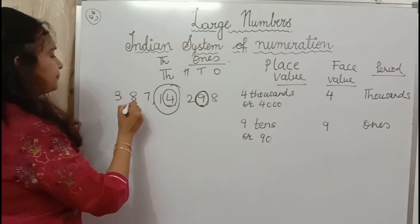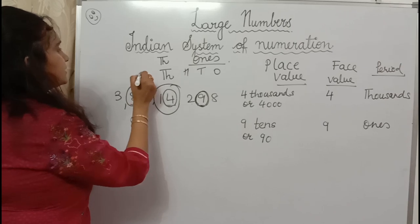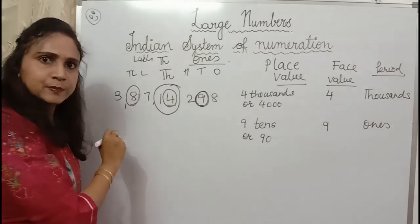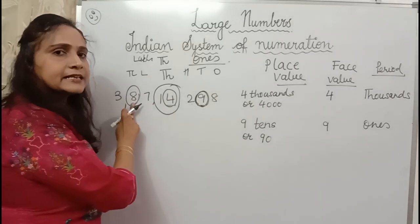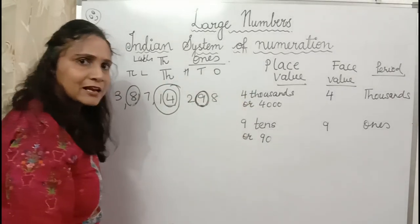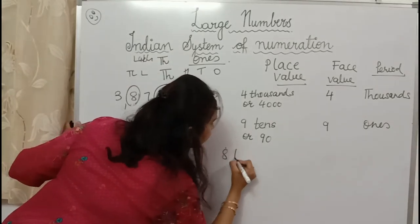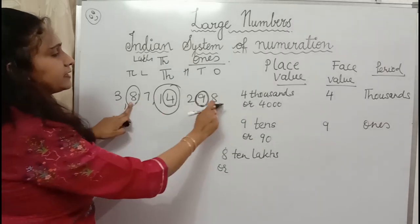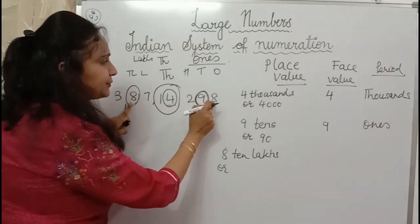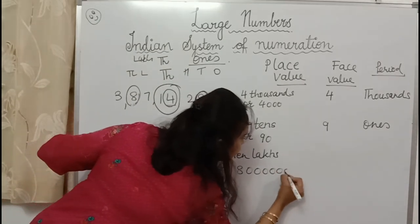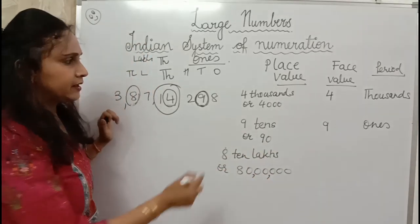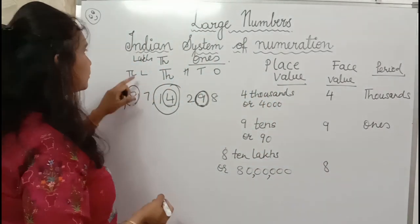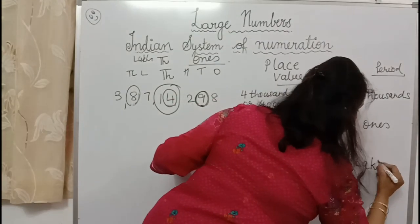Similarly, let's see digit 8. This 8 is at which place? Ones, tens, hundreds, thousands, ten thousands, lakhs, ten lakhs — it is at ten lakhs place. So place value will be 8 ten lakhs, or in numbers, 80,00,000. In place value we write S. Face value: 8 remains 8. Period: ten lakhs falls in the lakhs period, so the period is lakhs.